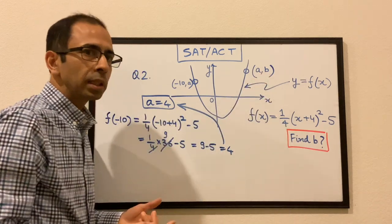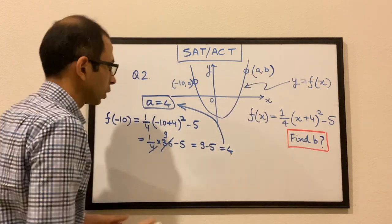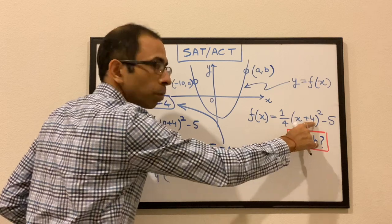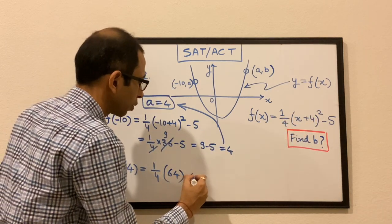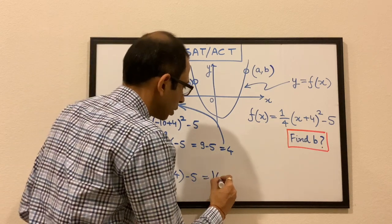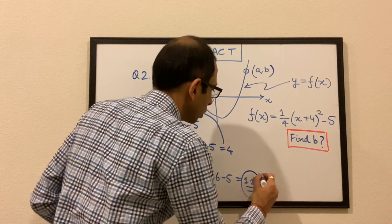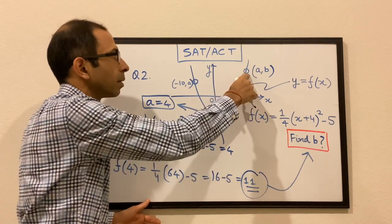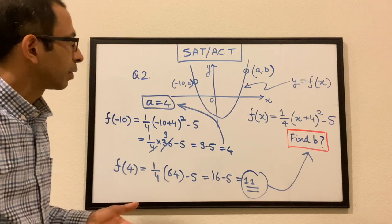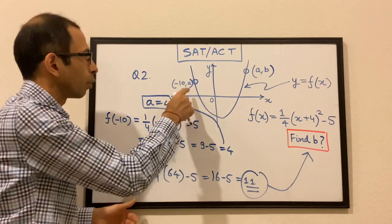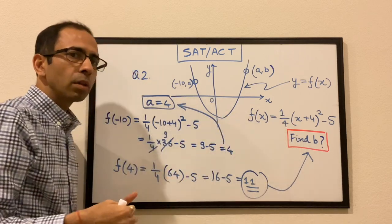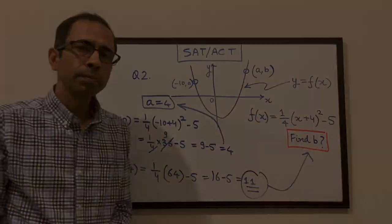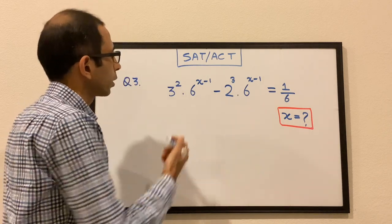Now for b, we plug in x = a = 4: f(4) = (1/4)(4 + 4)² − 5 = (1/4)(8)² − 5 = (1/4)(64) − 5 = 16 − 5 = 11. So the value of b is 11. We first found a by plugging in x = −10, then found b by plugging in x = a = 4.